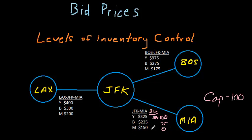Now let's say we were using bid price control. Instead of having protection levels, we would have one bid price for the leg.